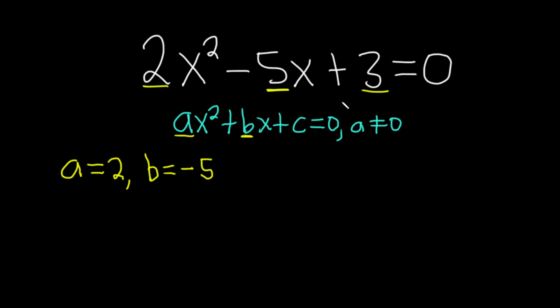And c is the constant term, so c = 3, again just via matching. And so the formula for the quadratic equation solutions is given by x = (-b ± √(b² - 4ac)) / (2a).